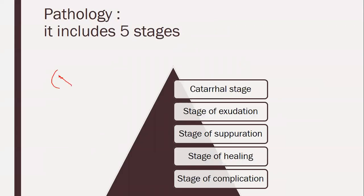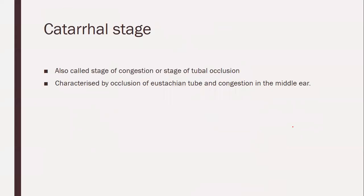Pathology involves five stages — very important. It is divided into: catarrhal stage, stage of exudation, stage of suppuration, stage of healing, and stage of complication. First is the catarrhal stage, otherwise called the stage of congestion or stage of tubal occlusion. It is characterized by occlusion of the Eustachian tube and congestion in the middle ear — two characteristic features that happen during the catarrhal stage.